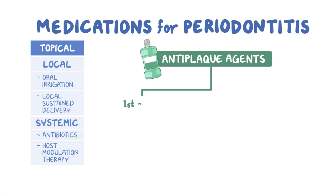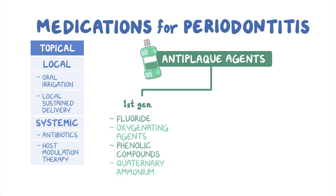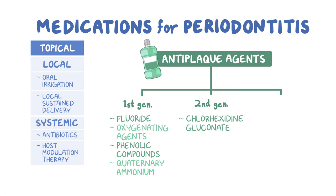First-generation agents include fluoride, oxygenating agents, phenolic compounds, quaternary ammonium compounds, among other antimicrobials. Second-generation agents like chlorhexidine gluconate have prolonged antibacterial activity. Finally, we have third-generation agents that interfere with the ability of the bacteria to attach to the teeth. The main representative of this group is delmopinol hydrochloride.